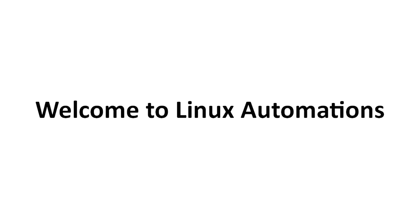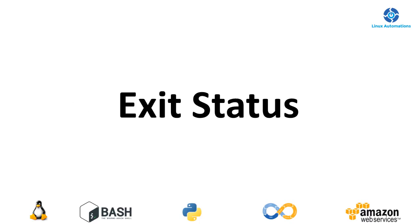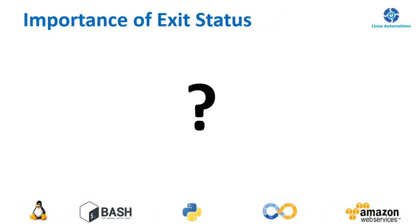Welcome to Linux Automations. In today's class we are going to talk about exit status in a shell script. Firstly you need to understand the importance of exit status. With shell scripts you are going to make utilities which may be used by other users or other programs in the future, and you should make sure your script provides proper statuses so that other programs can work based on those statuses.